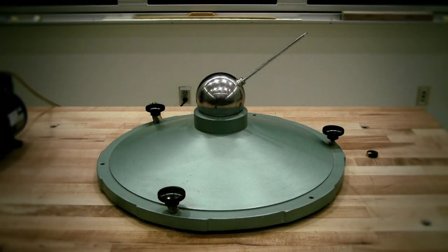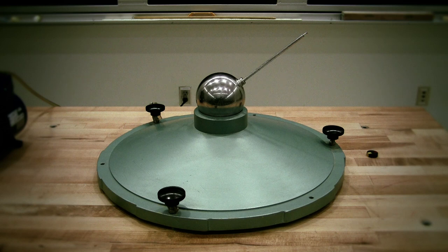I will demonstrate precession with what is known as an air gyroscope. This particular model was manufactured by Ealing Corporation in 1956.